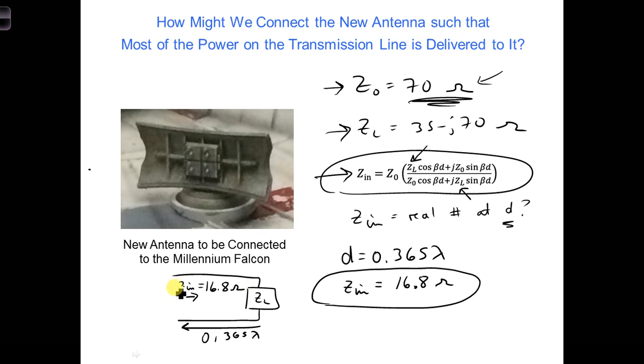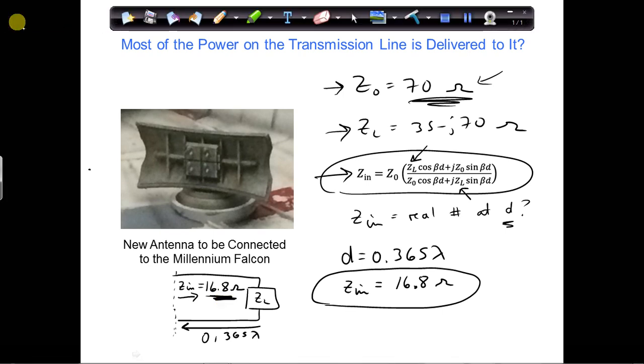So now we're going to think about, is there a way we can transform this 16.8 ohms to an impedance of 70 ohms? In this case, if we're standing at this position, we can think of our load as being our input impedance, which is 16.8 ohms. And now we want to transform that to 70 ohms.